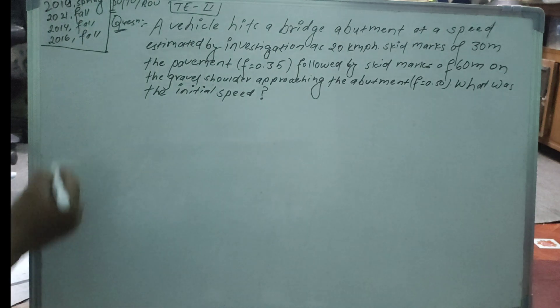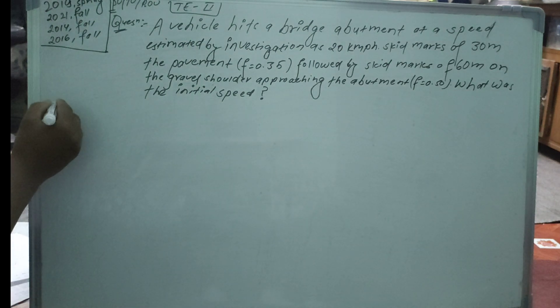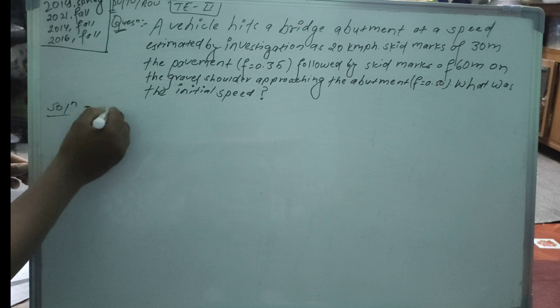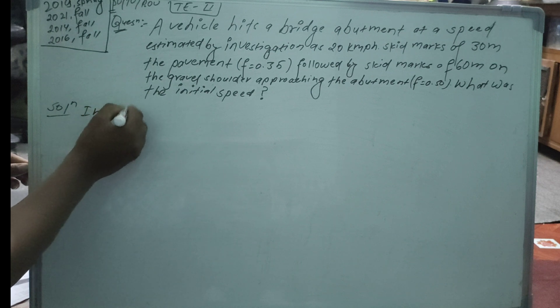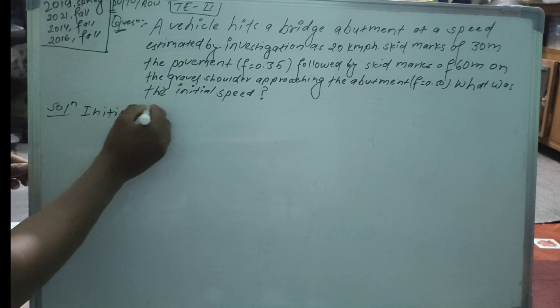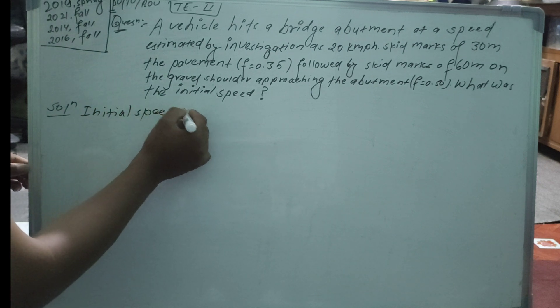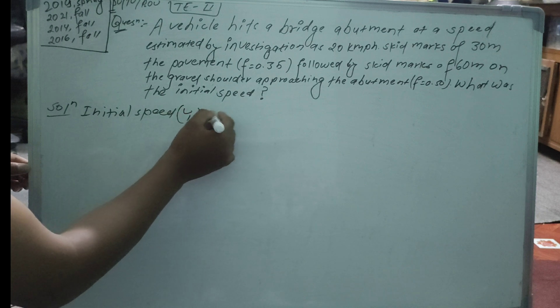The question asks: what was the initial speed? The initial speed is called V1.